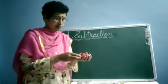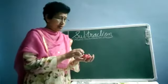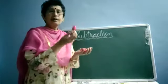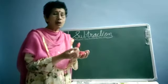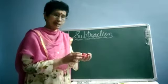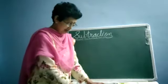Now how many are left with me? 1, 2, 3 and 4. From 6, 2 are gone. So answer is 4. So 6 minus 2 is 4.